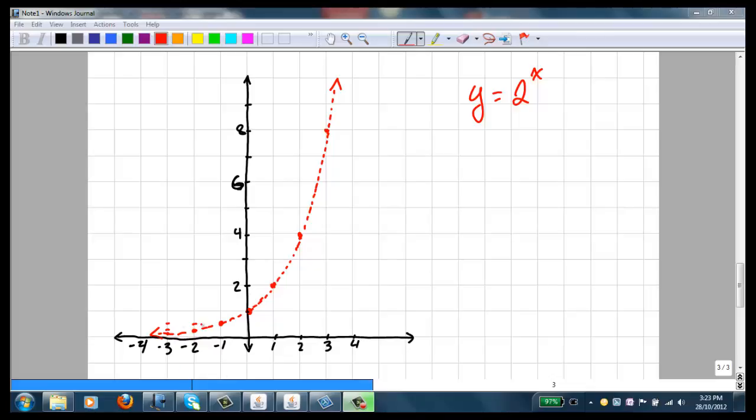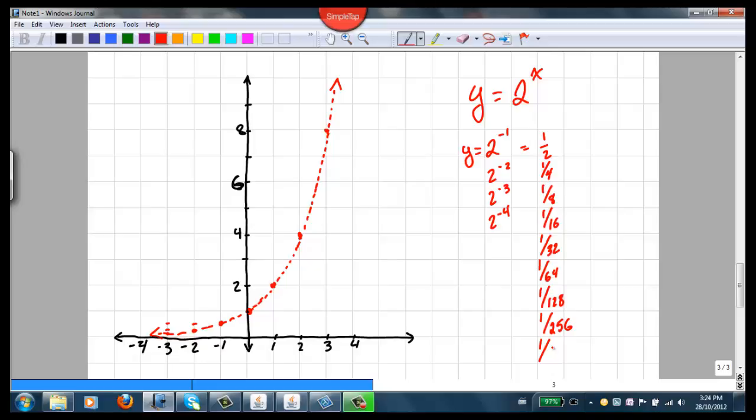When x is less than 0, when x is over on the negative side, then the graph is approaching the x-axis. But it'll never get to the x-axis. For example, if we have y equals 2 to the negative 1, we get 1 half. If we get 2 to the negative 2, we get a quarter. If we get 2 to the negative 3, we get an eighth. But we never actually get there. There's a horizontal asymptote on the x-axis. So the graph gets further away from the x-axis on the positive side and closer to the x-axis but never actually touching it on the negative side.